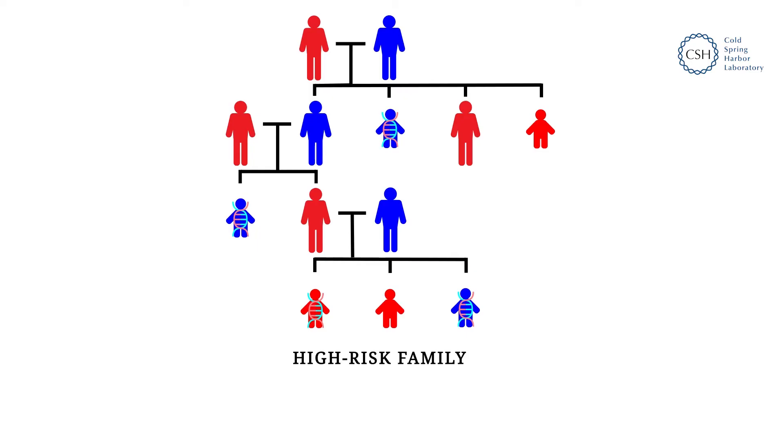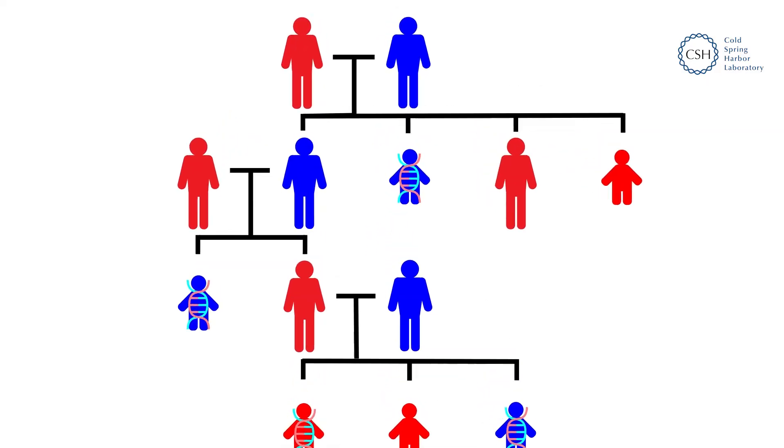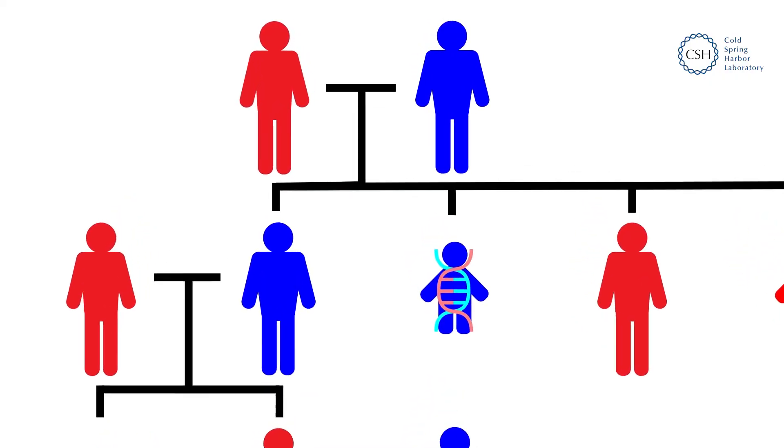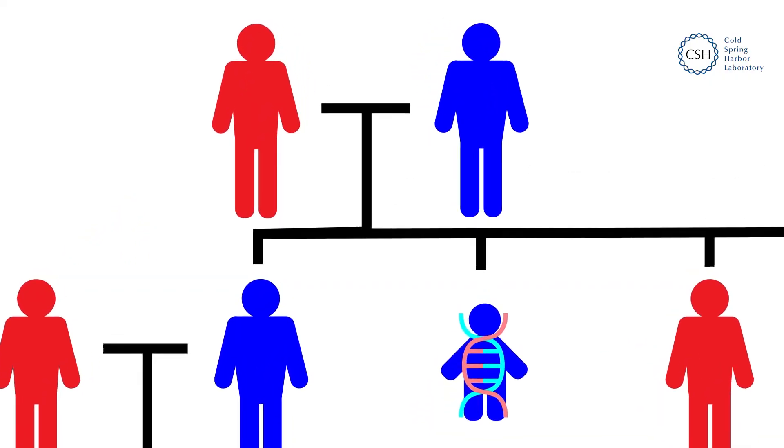According to the unified theory model, about 1% of all families are at high risk of having a child with ASD. In high-risk families, ASD is not the result of a random genetic mutation. Instead, ASD is inherited.